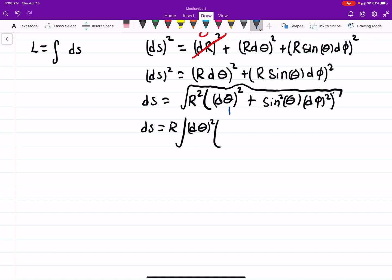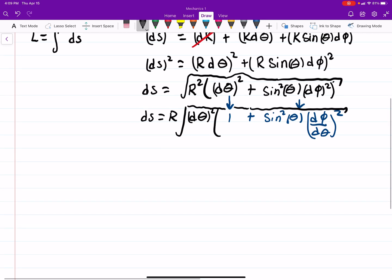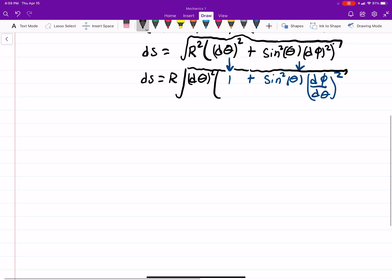this part will leave me with 1 plus, and then I'll still have my sine squared of theta, but I'll have d phi over d theta squared. And obviously d theta squared, that can come out as well, but I'm going to put that at the back end there.